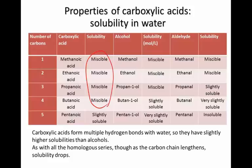With aldehydes, this begins to happen at propanal — a chain of three carbons. For alcohols, it happens at butanol, a chain of four carbons. And for the acids, because the acid group is able to form so many hydrogen bonds, it actually doesn't occur until pentanoic acid — a carbon chain of five.